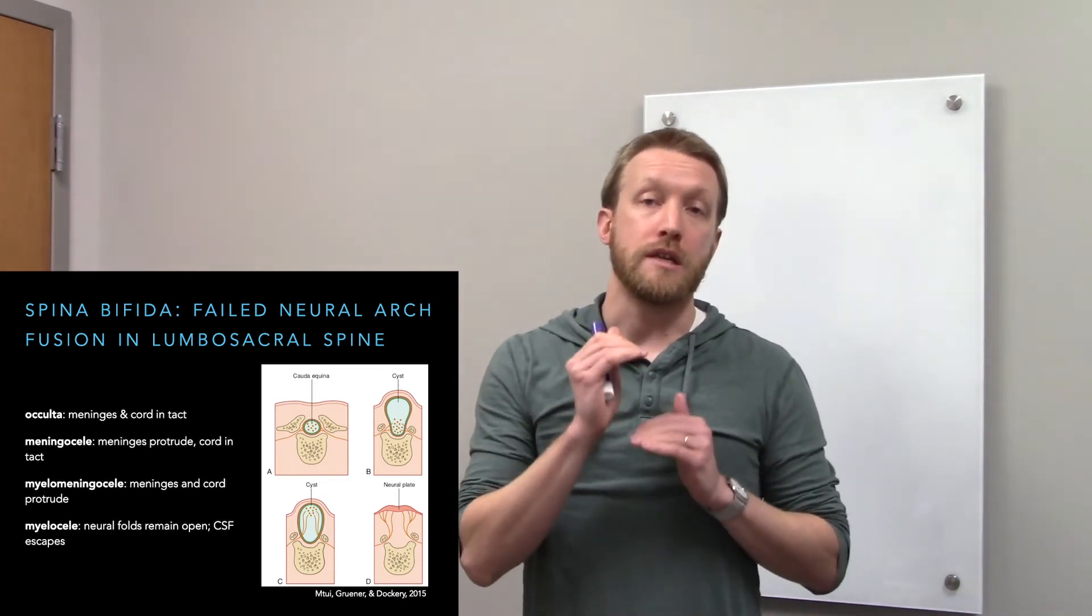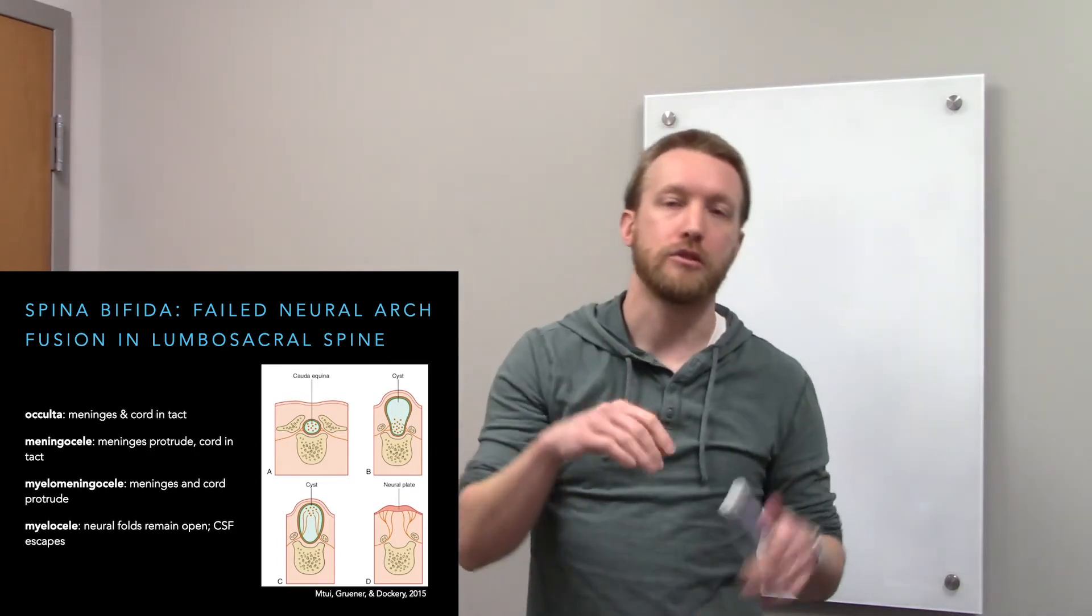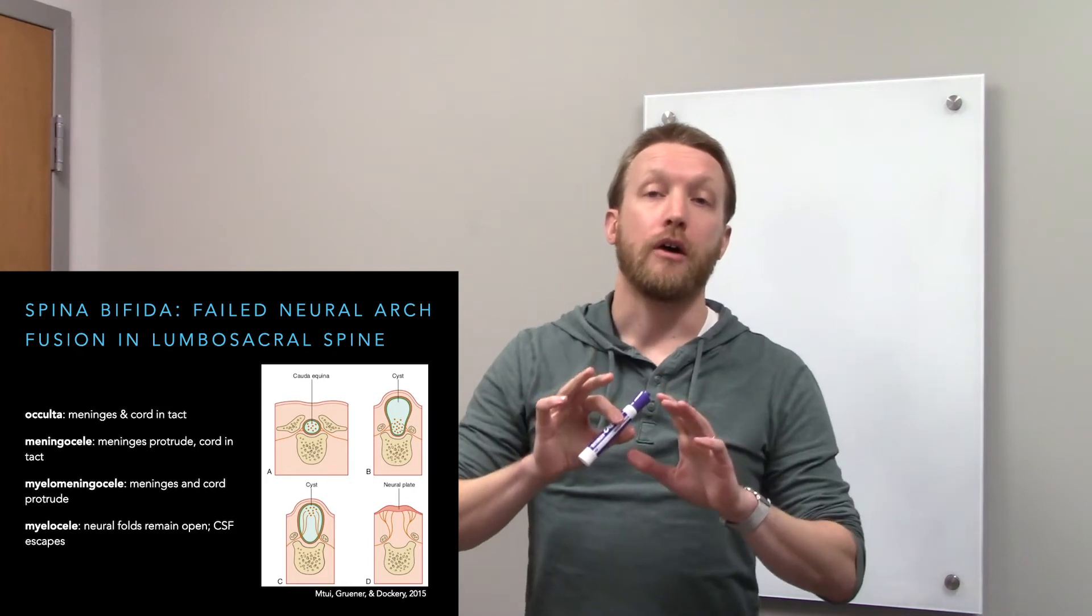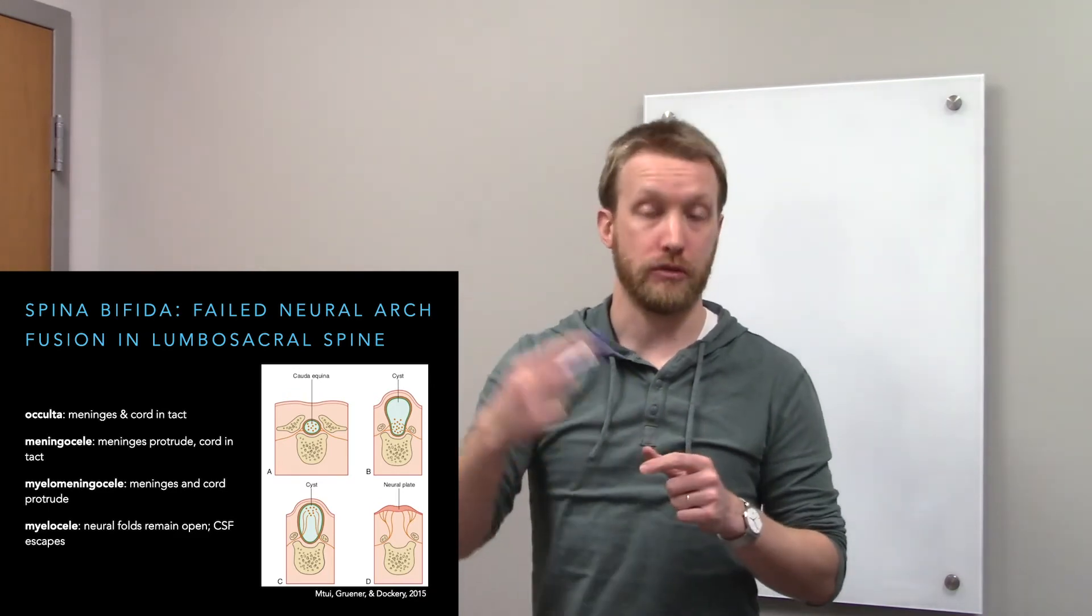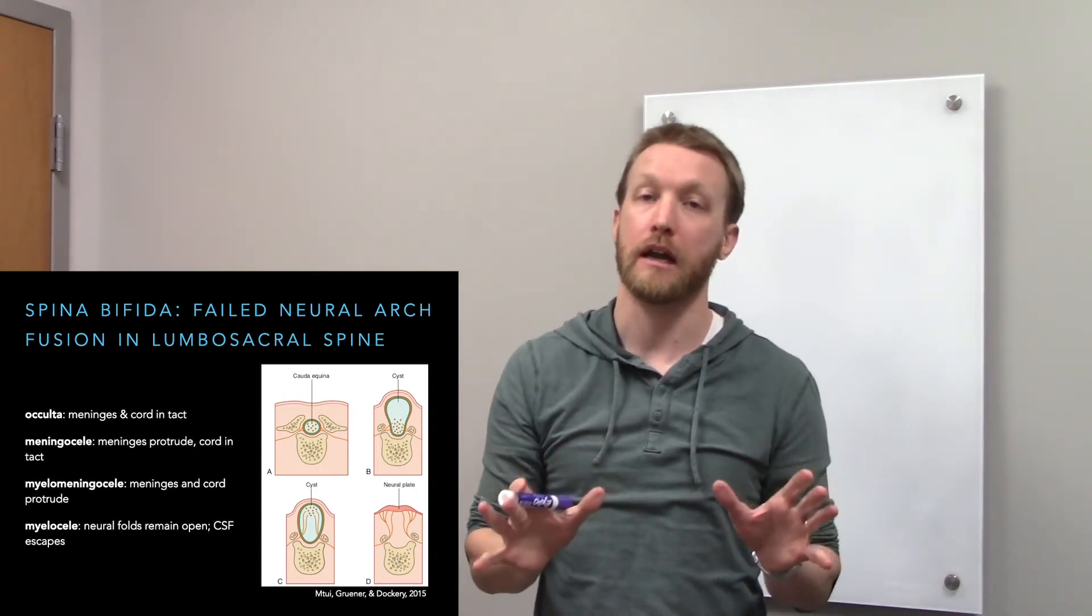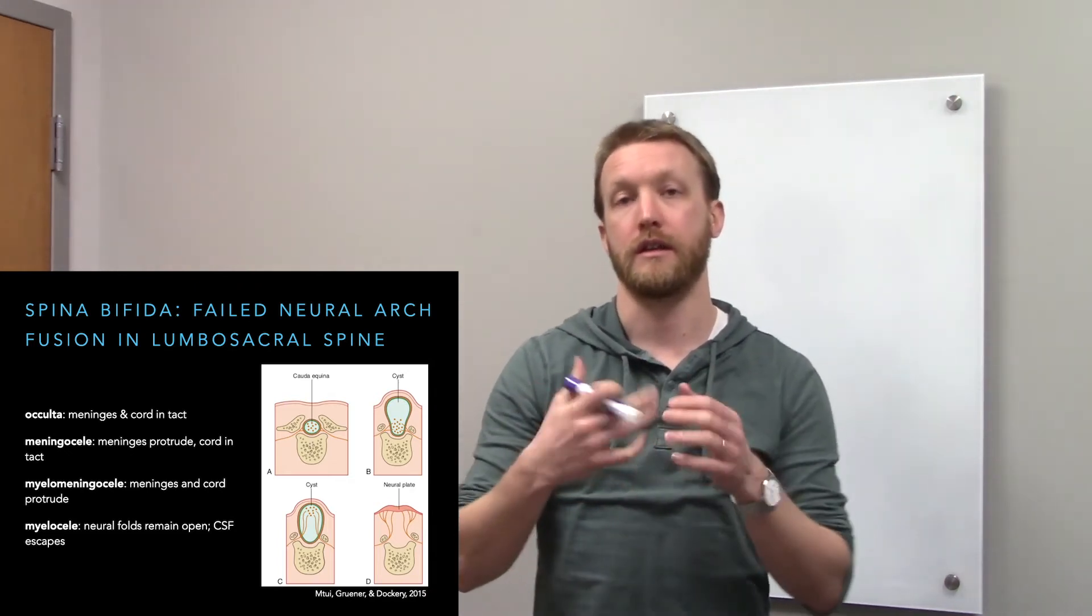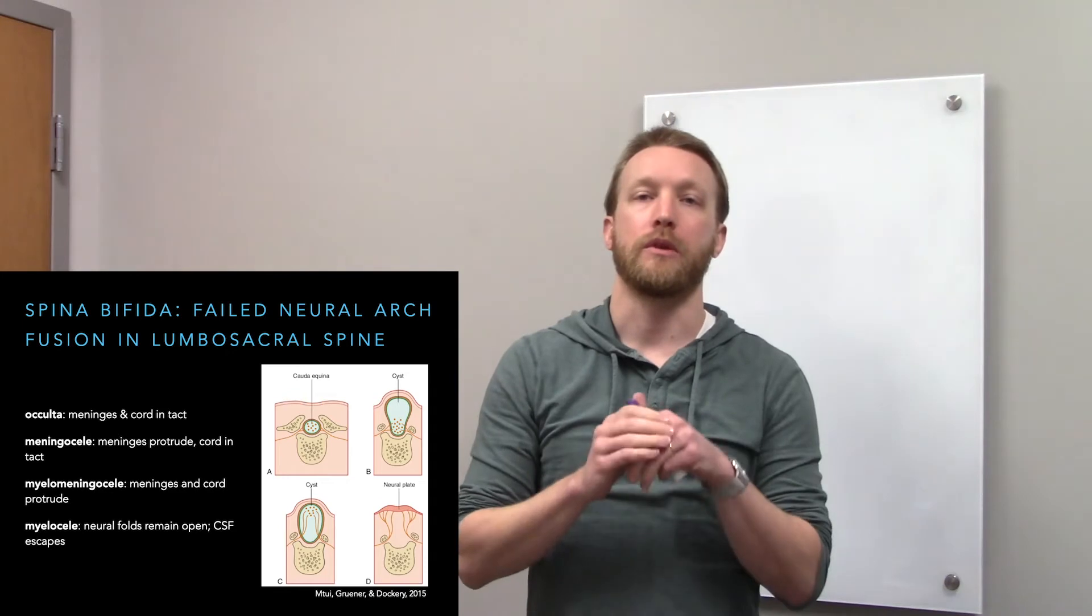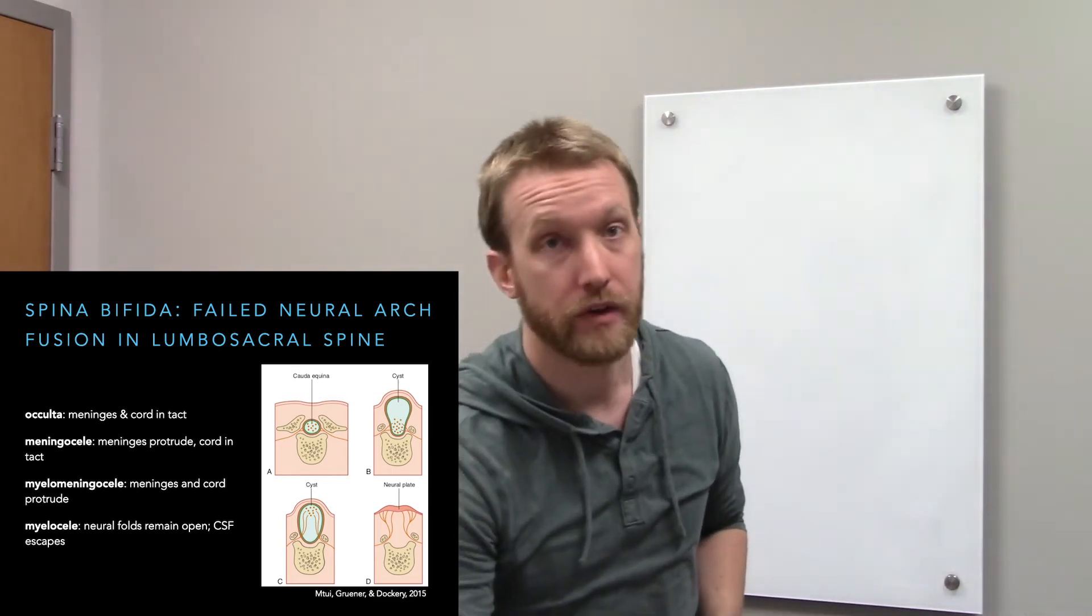The next two are herniation neural tube defects. Here, neurulation went fine. We folded over, got a tube surrounded by skin. But now either the meninges by themselves or the meninges and the spinal cord herniate out. They can form an exposed cyst. Meningocele, just the meninges. Obviously not good, but not as bad as myelomeningocele, where meninges and nervous tissue are herniated out. And the worst of them all, myelocele. That's the bottom right. That's where we have a failure with primary neurulation. We remain a sheet. These are very serious.